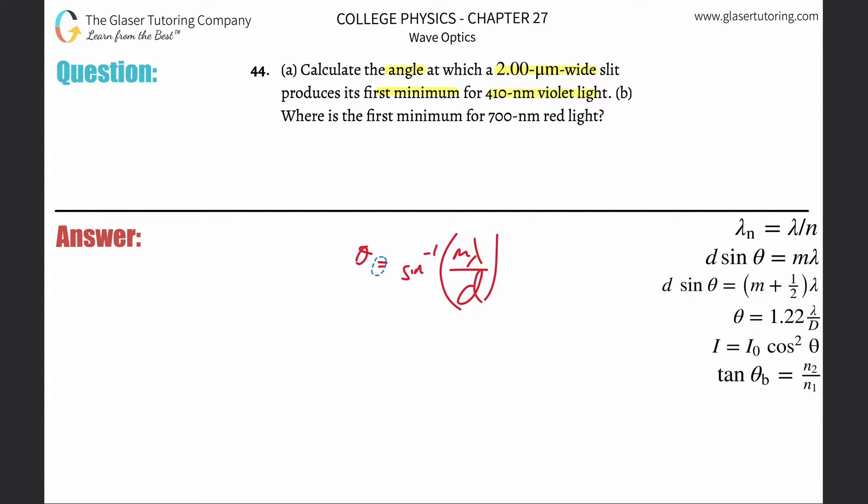So basically now just plug in the values. It says first minimum, so m is one. Lambda, they told you the wavelength is going to be 410 times 10 to the minus ninth because it's a nanometer, just converted into meters.